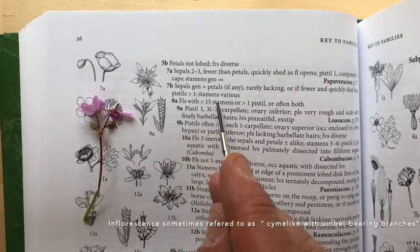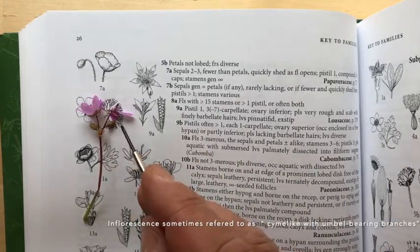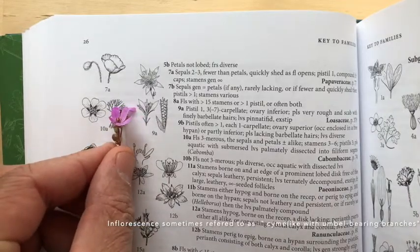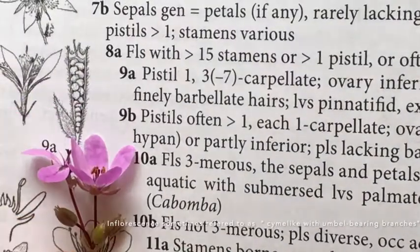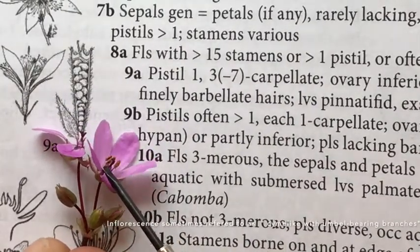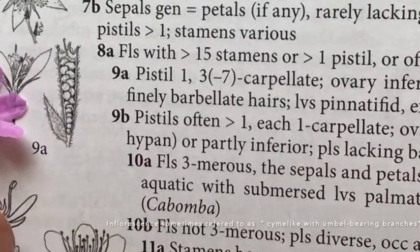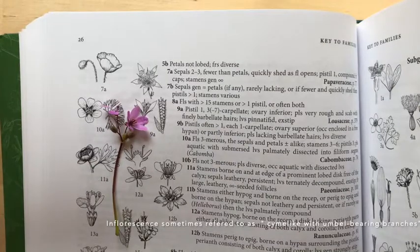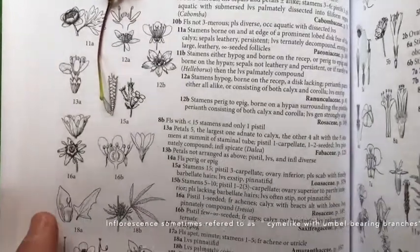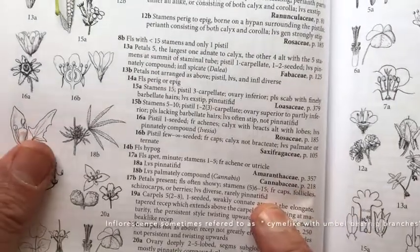8A: flowers with greater than 15 stamens or greater than one pistil, often both. We don't like that - we already counted our stamens and saw we could only see 5. You can count them: 1, 2, 3, 4, 5. So we're going to go all the way down to 8B: flowers with less than 15 stamens and only one pistil.